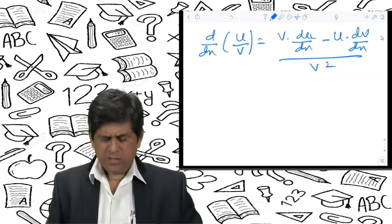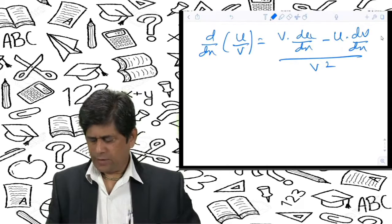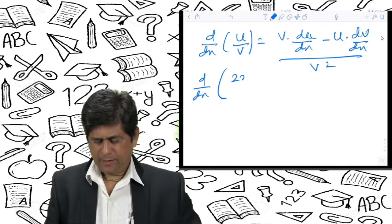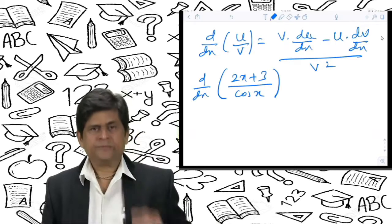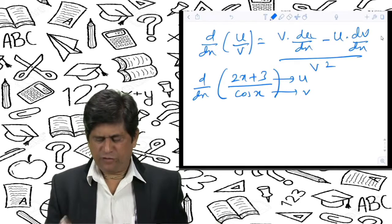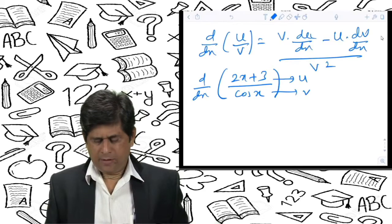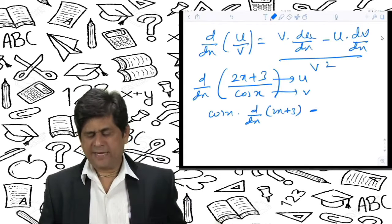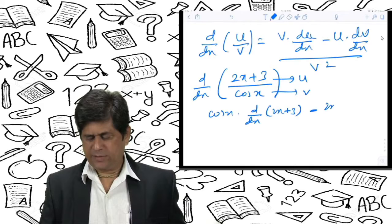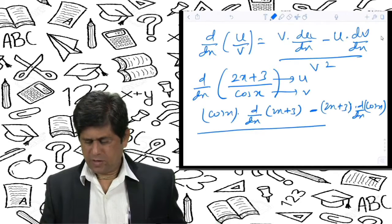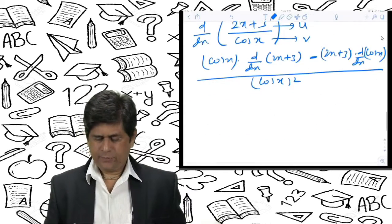For example, suppose you have the function (2x + 3) / cos x. Here the numerator u = 2x + 3 and denominator v = cos x. Applying the formula: [cos x · d/dx(2x + 3) − (2x + 3) · d/dx(cos x)] / cos²x.